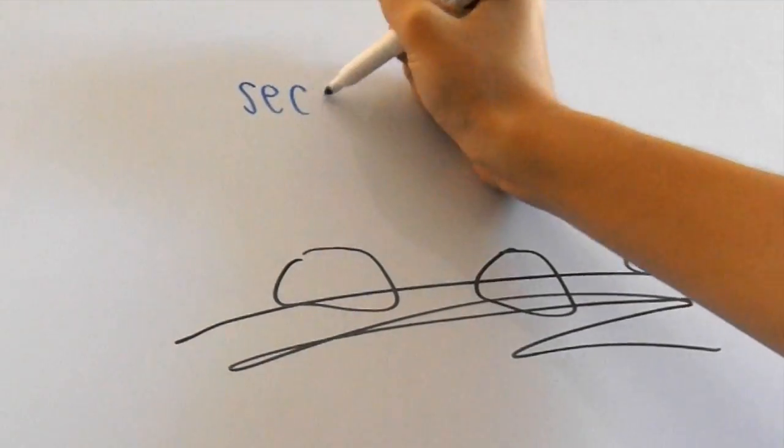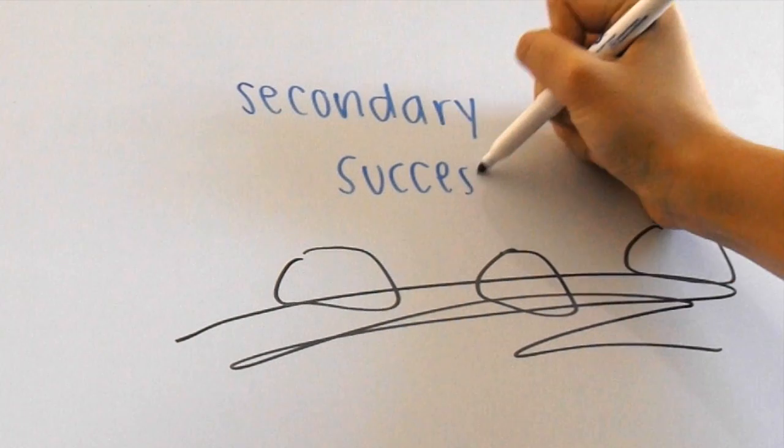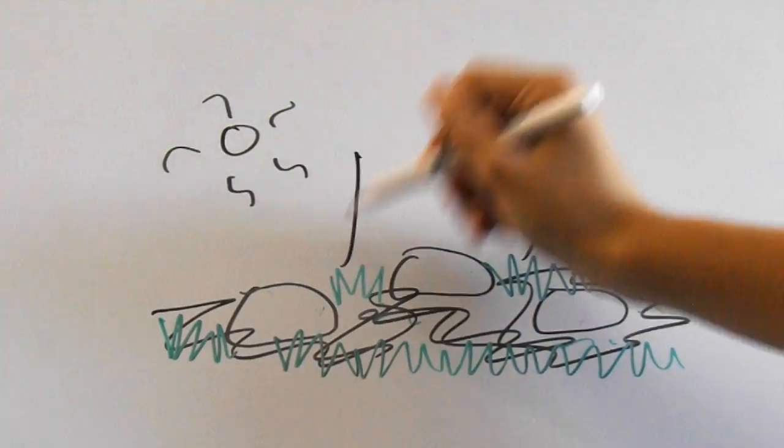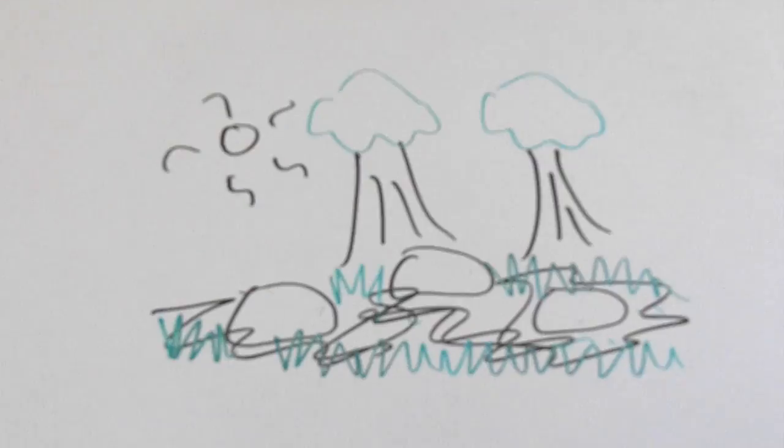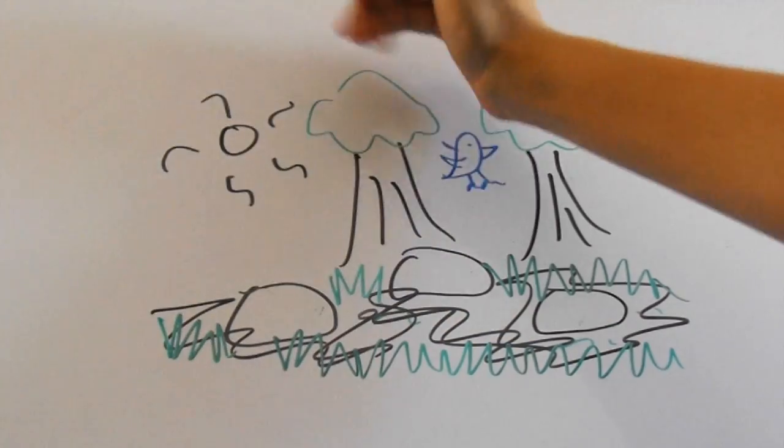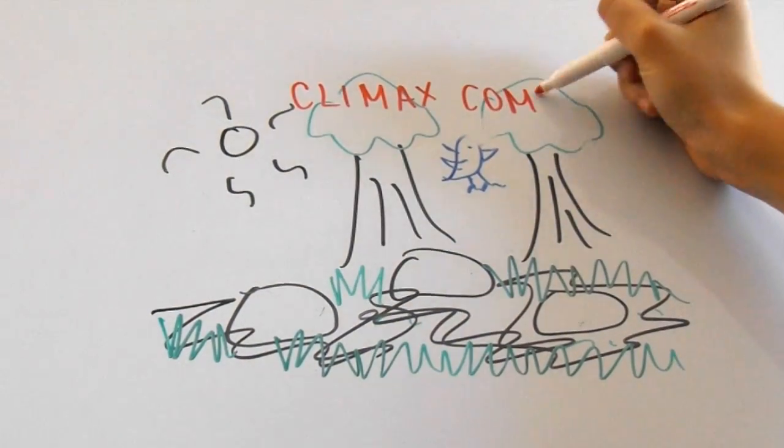On the other hand, secondary succession occurs when there was already an existing community, but it was destroyed and left some soil behind. This is basically like primary succession except there's already soil. Soon, grasses, shrubs, trees, and animals will take over the area and plenty of vegetation will be there once more.